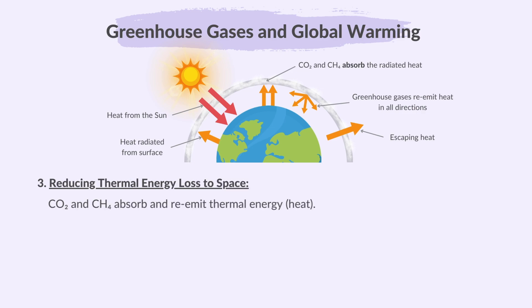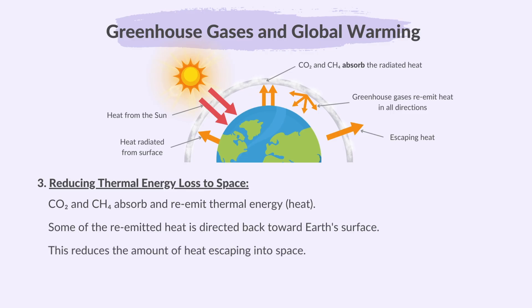So, as we just learned, carbon dioxide and methane absorb and re-emit thermal energy, and some of the re-emitted heat is directed back towards the Earth's surface. This reduces the amount of heat escaping into space. The trapped heat causes the warming effect known as global warming.